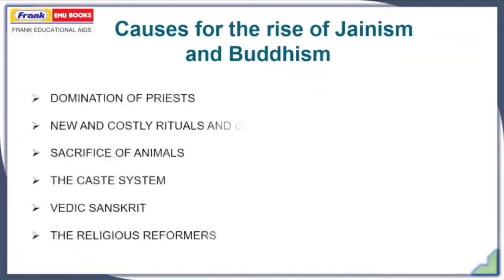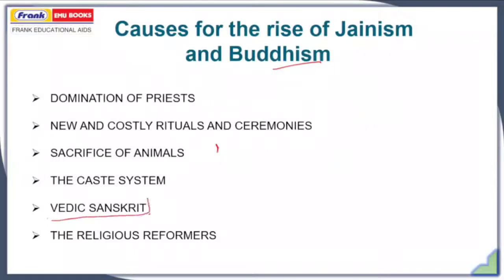Moving towards the causes behind the rise of Jainism and Buddhism, there were some common causes: domination of Brahman priests, new and costly rituals and ceremonies which were hated by many people of the early historic period. Also, there was sacrifice of animals, which was against the principle of non-violence preached by the reformers of Buddhism and Jainism. Then there was a discriminatory caste system. Also, Vedic Sanskrit was one of the major subjects of concern, because Vedic Sanskrit was not taught to women as well as to Shudras.